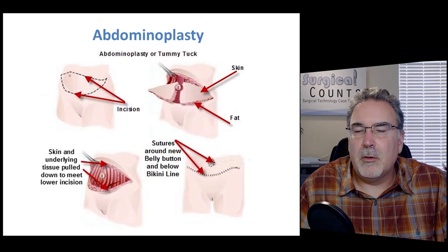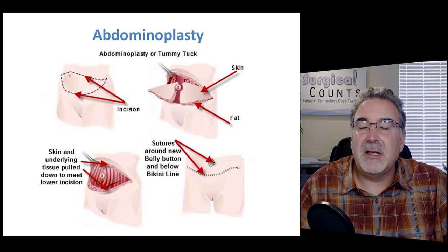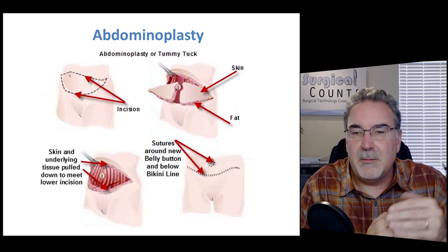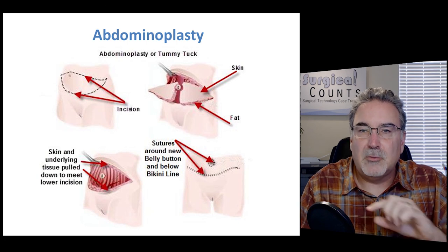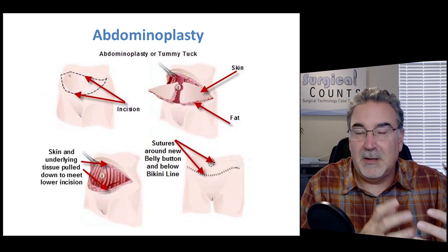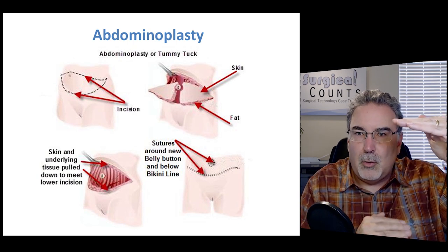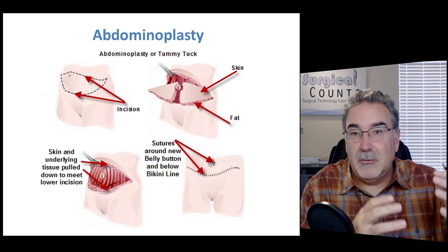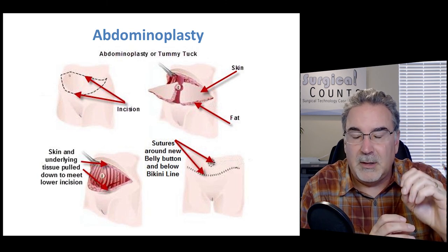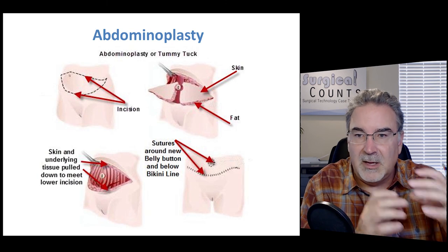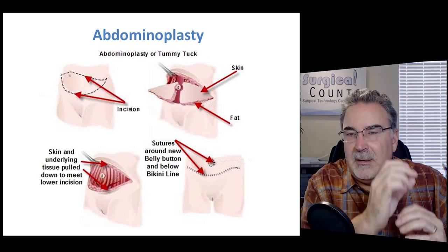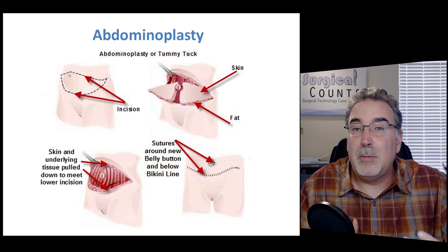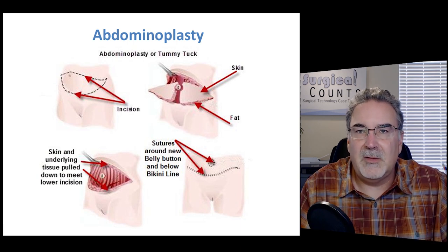An abdominoplasty is more involved than just liposuction. Here we're taking away not just some fatty tissue, but some skin itself — when the skin is extended out and we want to reduce the amount of skin in the abdominal area. We make a crescent-shaped incision around the umbilicus, pull the two layers of skin together and suture them down below the bikini line. This moves the umbilicus out of position, so just like we did with the nipple, we move it higher in the abdominal skin wall and suture it back into a more natural position. An abdominoplasty — or tummy tuck — is a reshaping of the abdominal skin area.